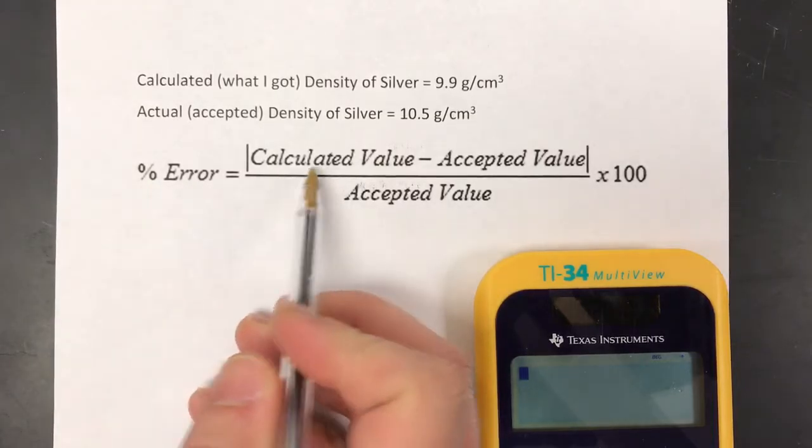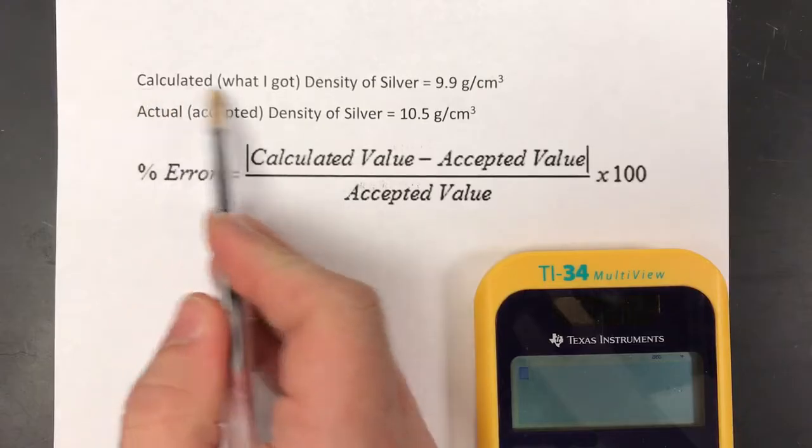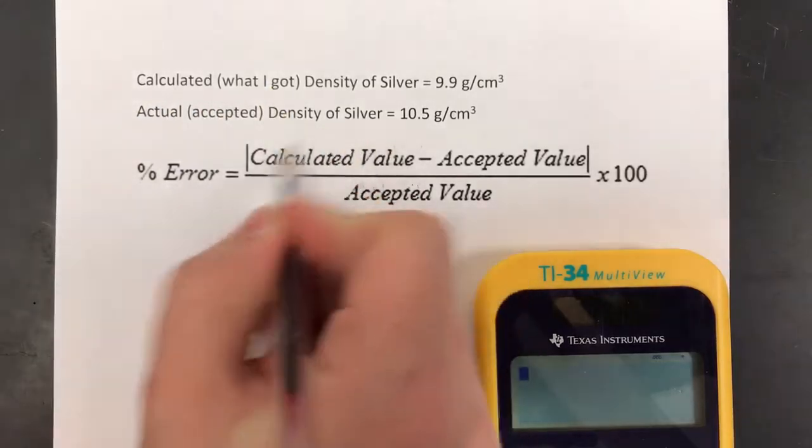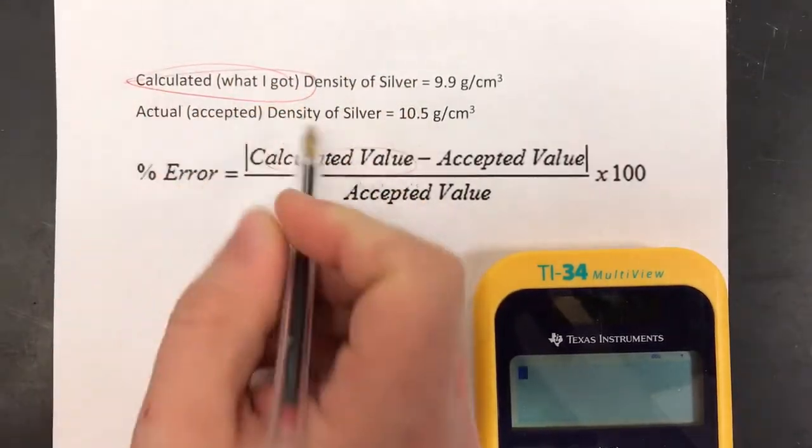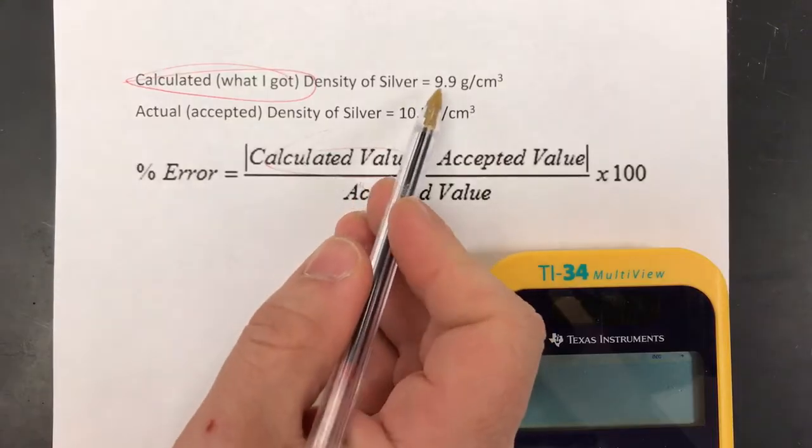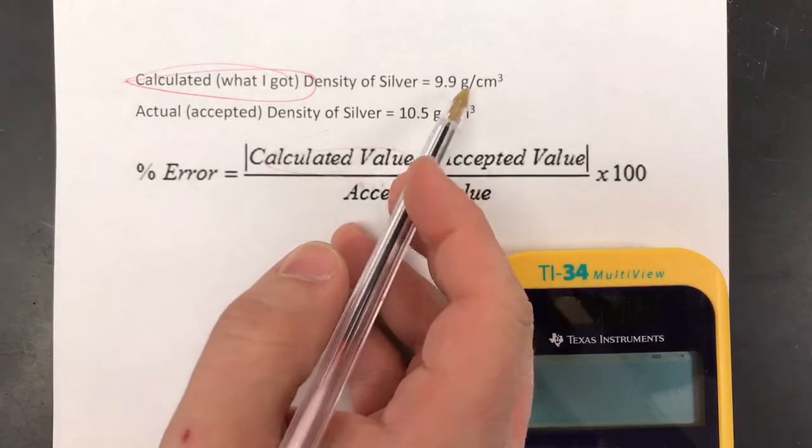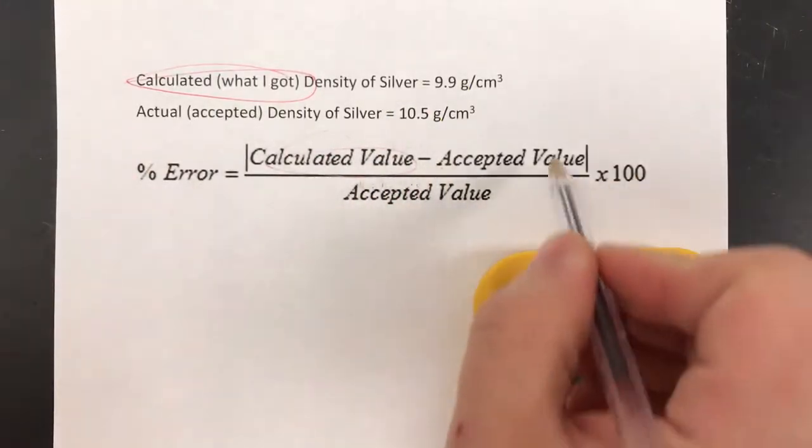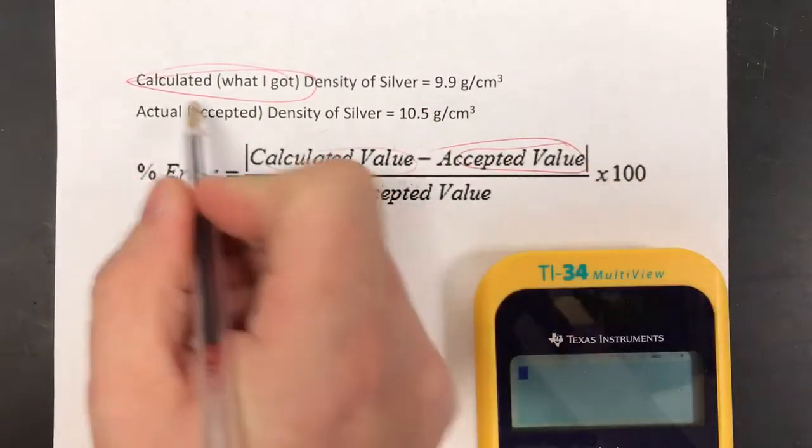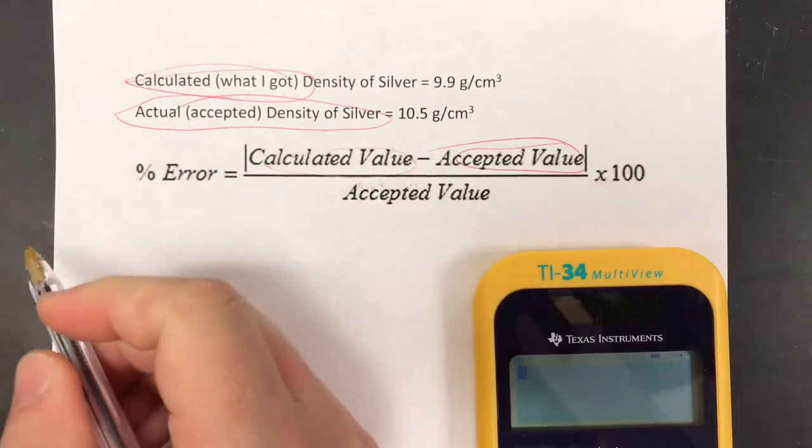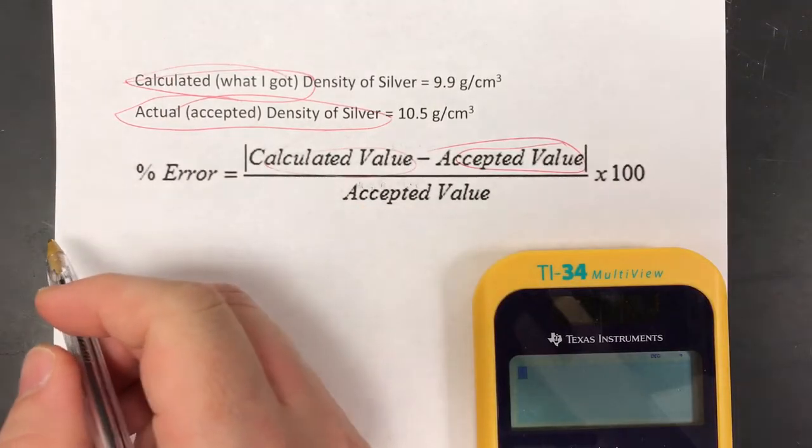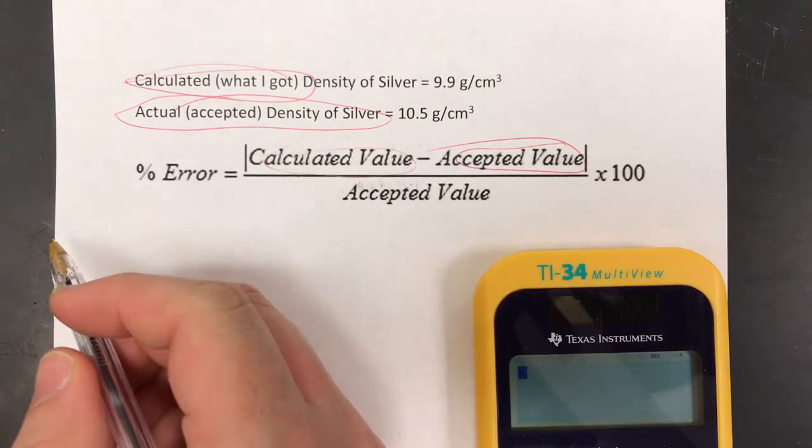Your percent error equals the calculated value. The calculated is what you got through your own experiment. In this case it's going to be 9.9 grams per centimeter cubed minus the accepted value. That's the value that you can look up, that you're checking against to see how close you are.